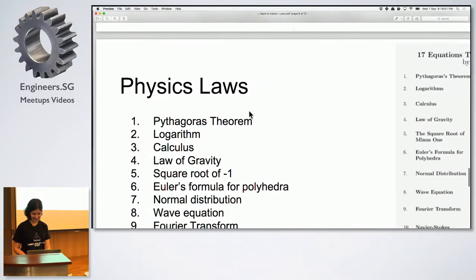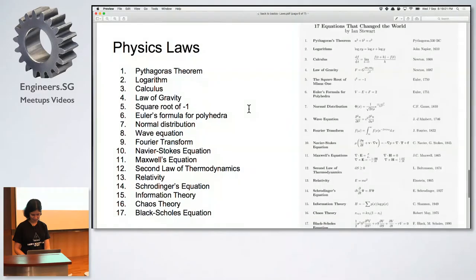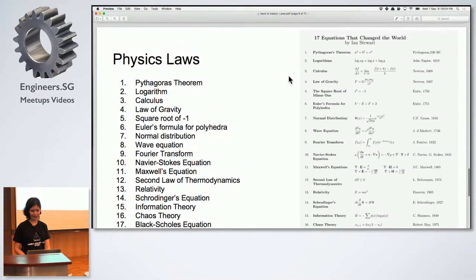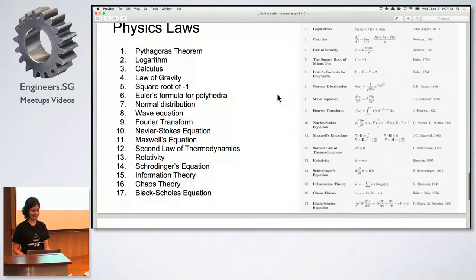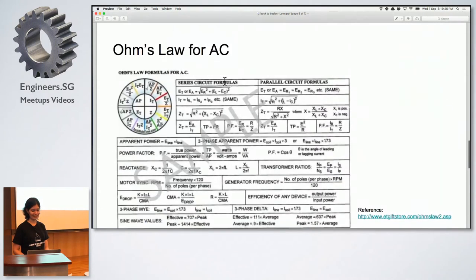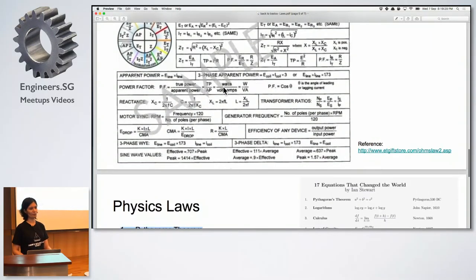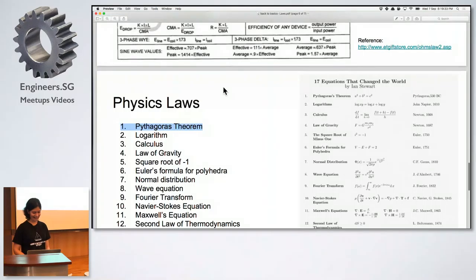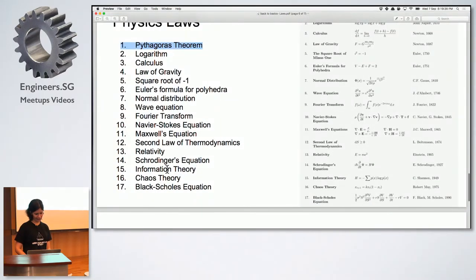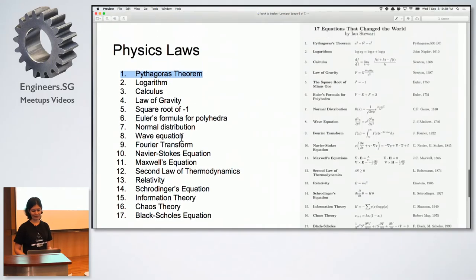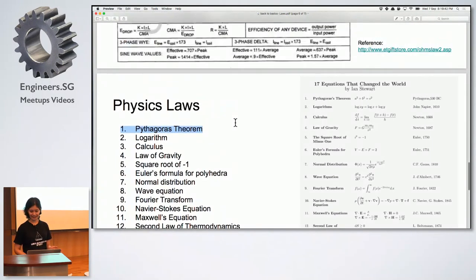And finally, I wanted to point out some physics law that might be pretty interesting. If you kind of Google for 17 equations that change the world, there are some things like Pythagoras theorem. A lot of them are mathematical. Laws of gravity. But I think Fourier transform is something that we use for modulation, demodulation. There is also Pythagoras theorem a little bit for AC circuits in a slightly different way. When you try to calculate reactants. So there are some, the rest are pretty much more of physics. But it was interesting to see some physics laws here as well.